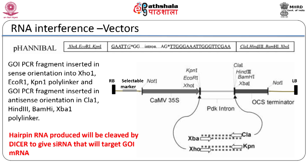The double-stranded fragments were generated in two separate PCR reactions with the appropriate restriction sites introduced in the respective primers. The construct when introduced into the plant would produce a hairpin RNA with a loop of 30±50 bases, which could be processed by Dicer to give rise to silencing RNAs specific to the endogenous target gene. Several other vectors based on this principle were developed, such as pHELLSGATE, pSTARGATE, etc.